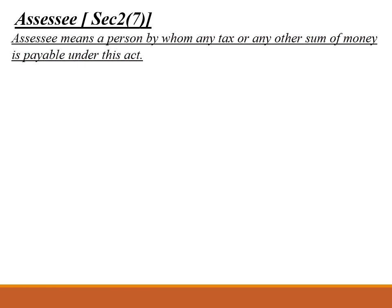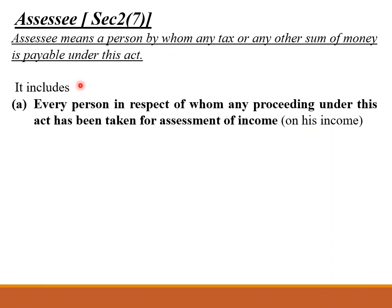Assessee means a person by whom any tax or any other sum of money is payable under this Act — that is known as Assessee. Assessee includes three categories. First, every person in respect of whom any proceedings under this Act has been taken for assessment of income. In simple words, every person whose income is taken for assessment in the assessment year under this Act is termed as an Assessee.